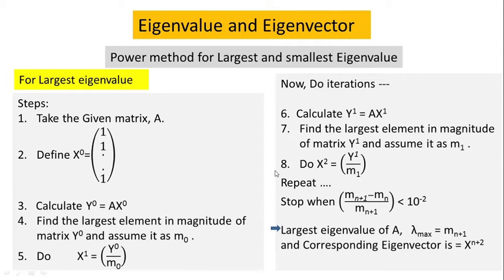Power method can be employed for finding out the largest and smallest eigenvalue of a given matrix. For the largest eigenvalue, these are the following steps. In the first step you have to take the matrix A. In the second step you have to define a column matrix X0, the elements of which are all ones — this is the initial guess. That means if A has a dimension of 3×3 then X0 will be a column matrix of elements 1, 1, 1.